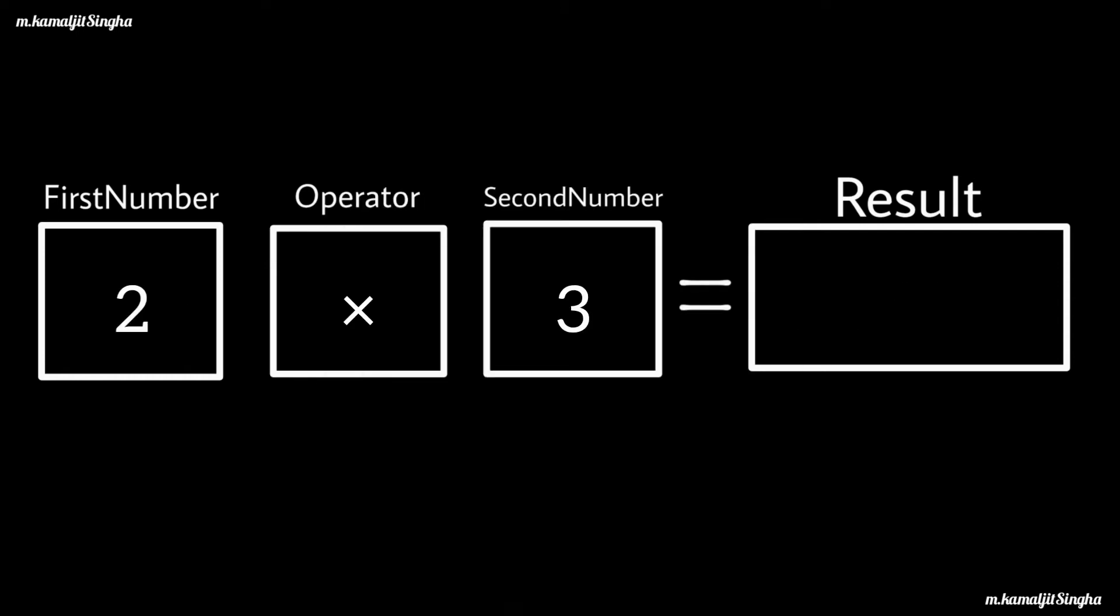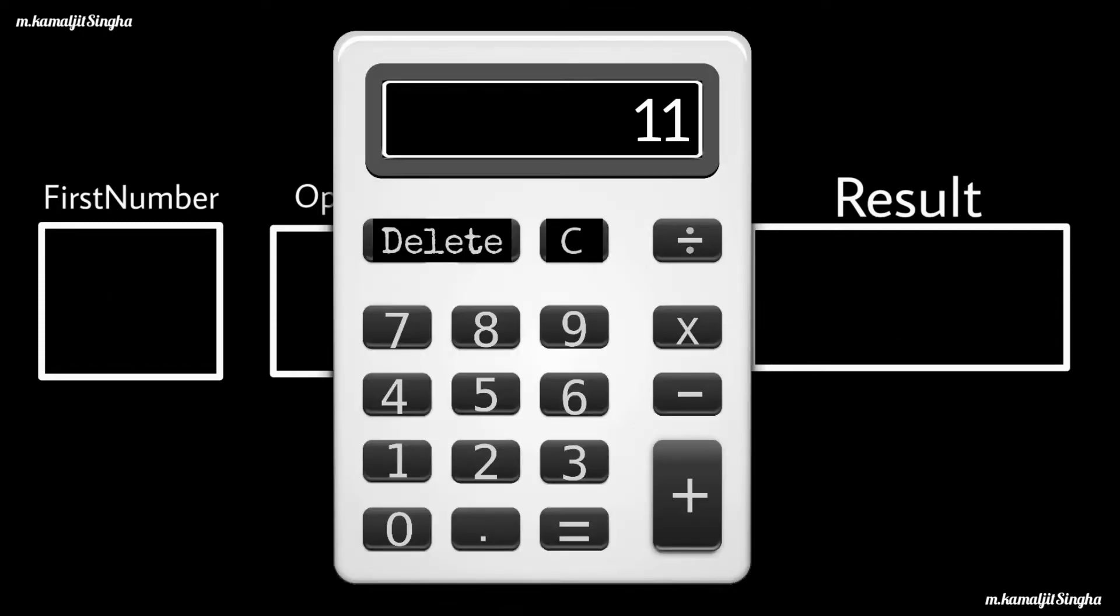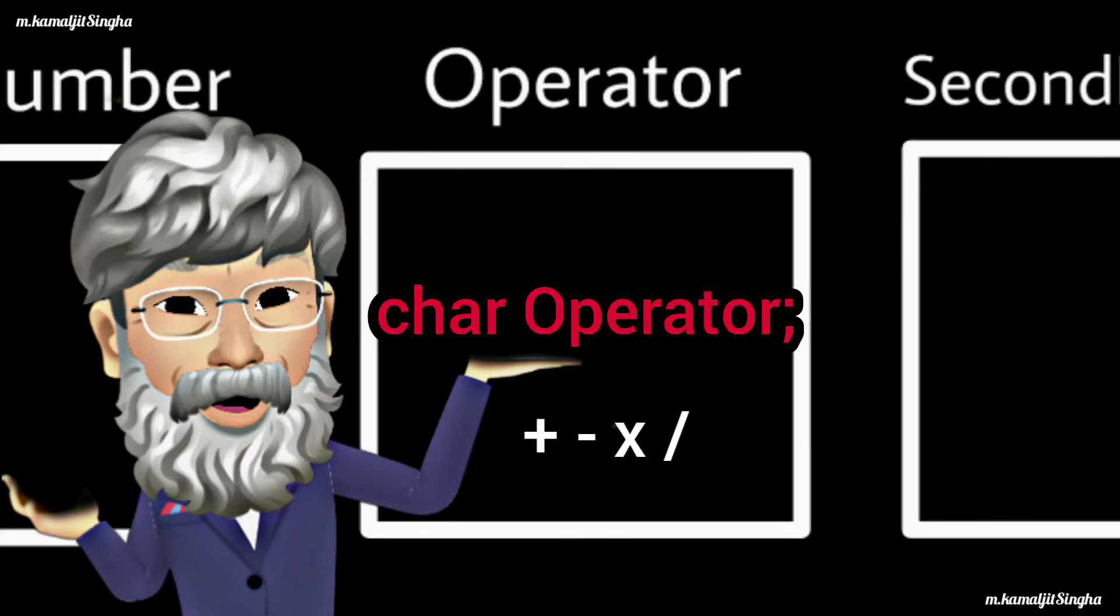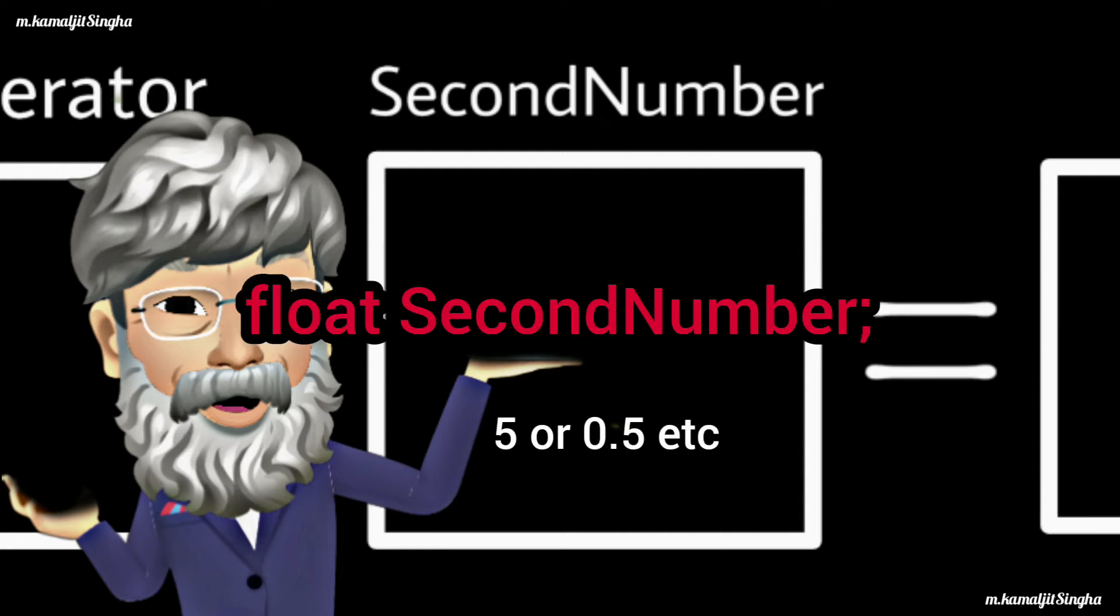You can see a pattern: the first number stores an integer or float number, the operator stores a character, and the second number stores an integer or float number.